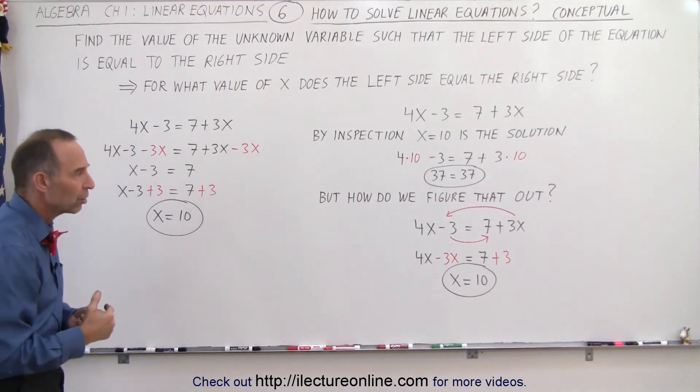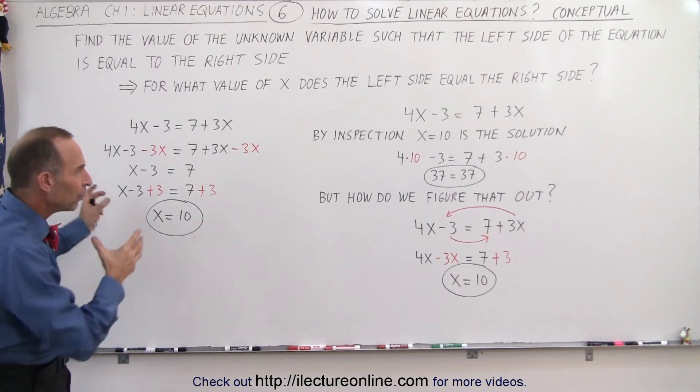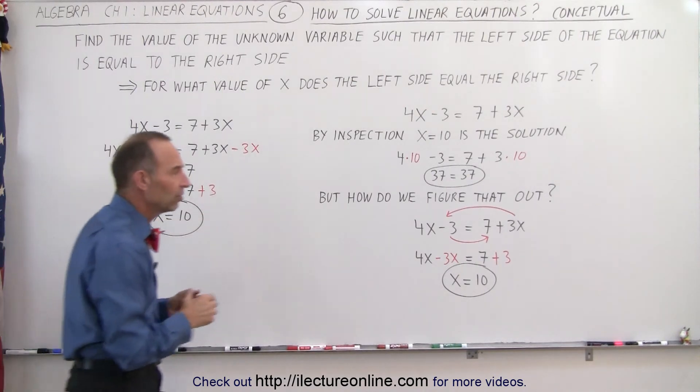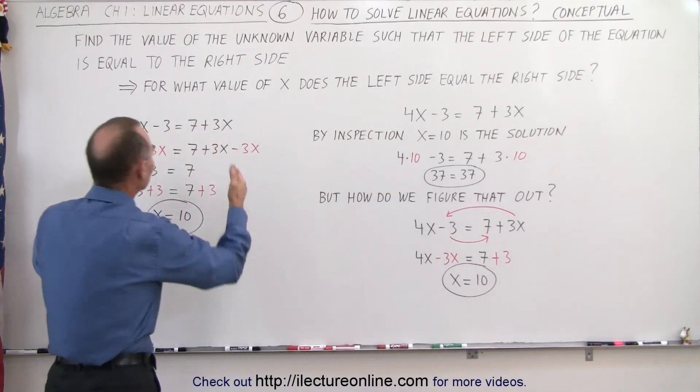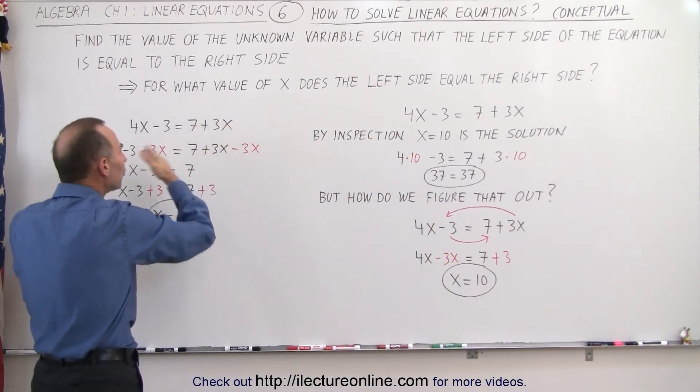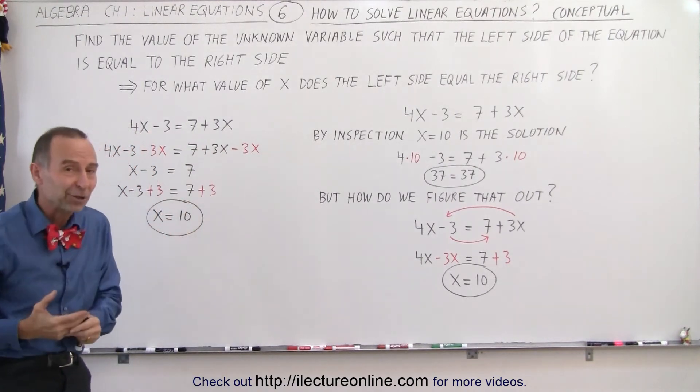You can see that we can use either approach. We can simply move things across the equal sign and change the sign, or we can add and subtract the same thing on both sides to move things essentially from one side to the other. The effect is exactly the same.